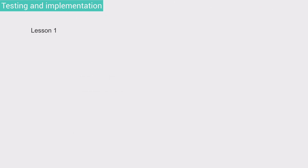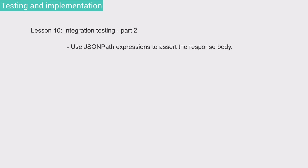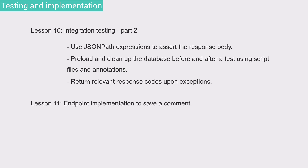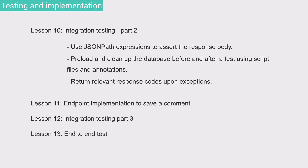Next lesson: Integration Testing Part 2. Here we continue integration testing using JSON path expressions to assert the response body, and then preloading and cleaning up the database before and after tests using script files and annotations. We also learn how to return relevant response codes upon exceptions. Then there's the endpoint implementation to save a comment, covering unit tests and implementation, followed by Integration Testing Part 3 where we write integration tests for saving the comment.